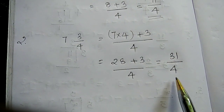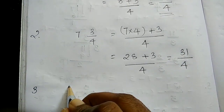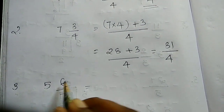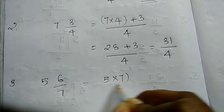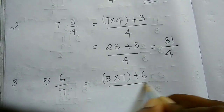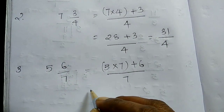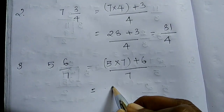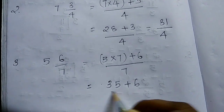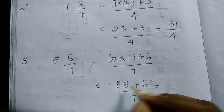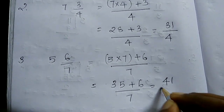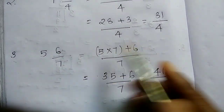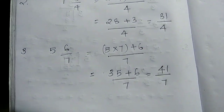Next one: 5 and 6/7. Write it as 5 into 7 plus 6, divided by 7. 5 into 7 is 35, plus 6 is 41, divided by 7. So the improper fraction of 5 and 6/7 is 41 divided by 7.